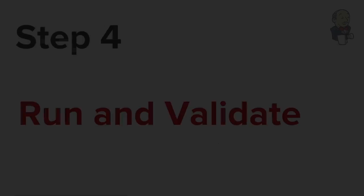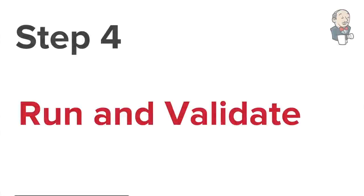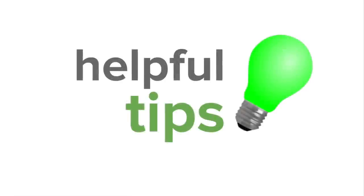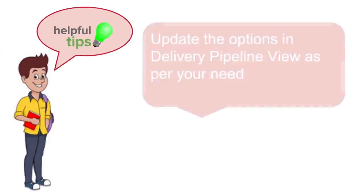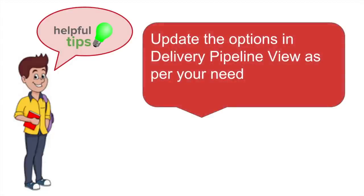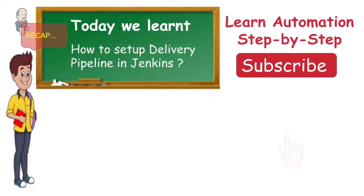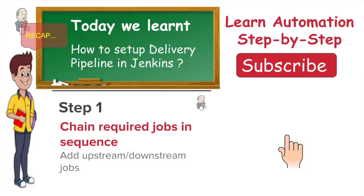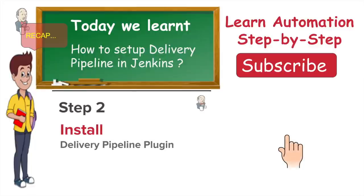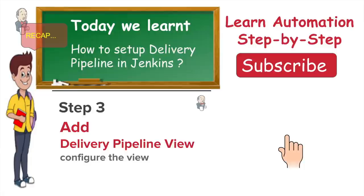Step four is to run and validate — which we have already done. The delivery pipeline view has many options and you can configure them as per your need. I hope this session was useful. If you have any doubts or suggestions, please add them in the comment section below. I will meet you in the next session. Thanks for watching.